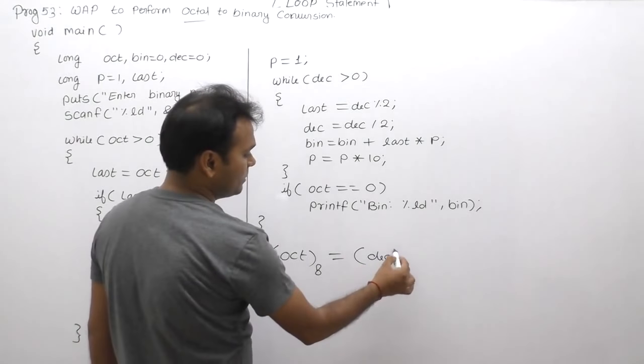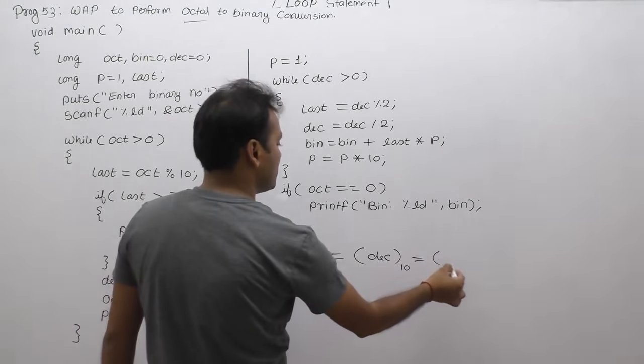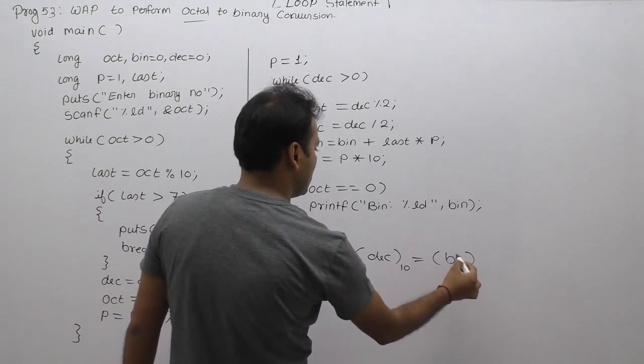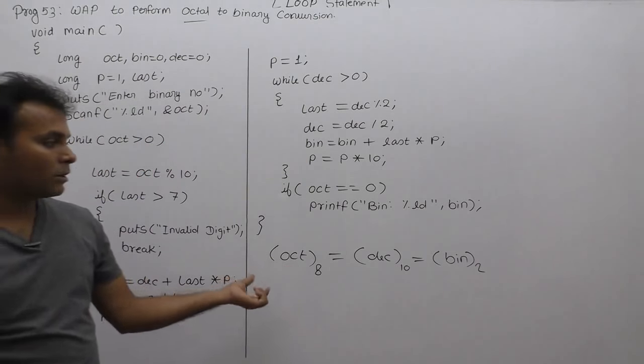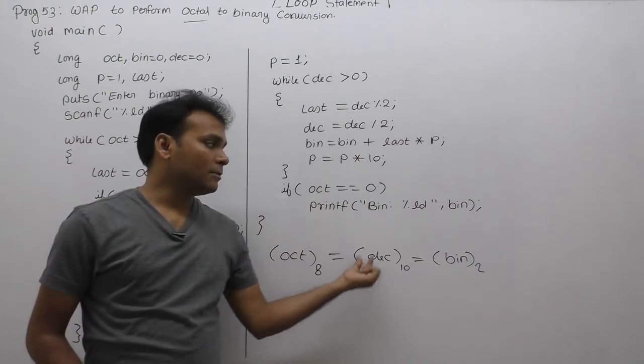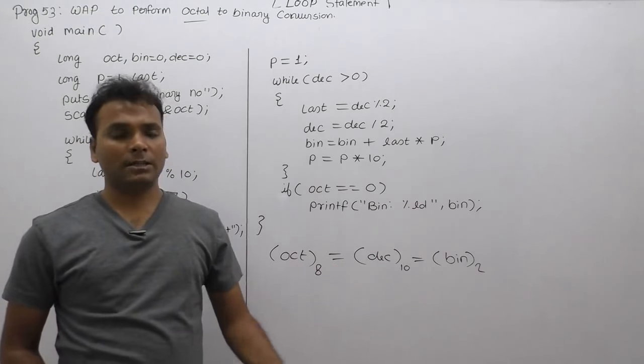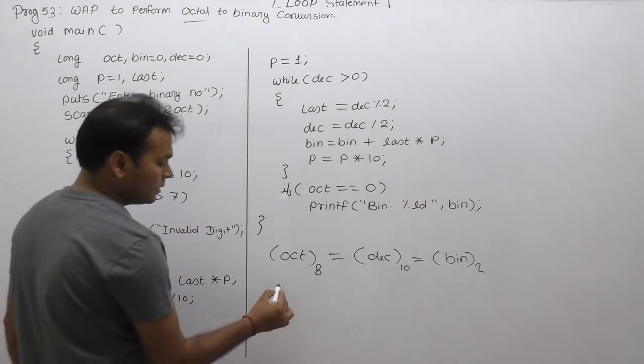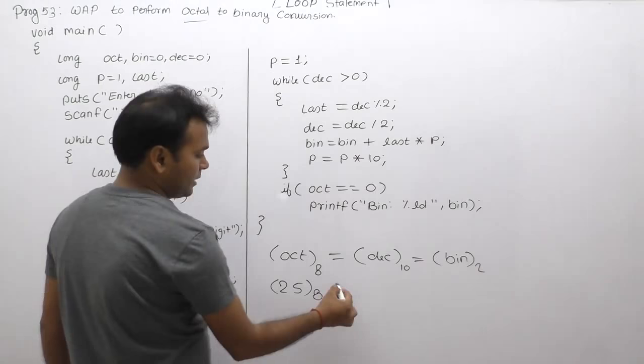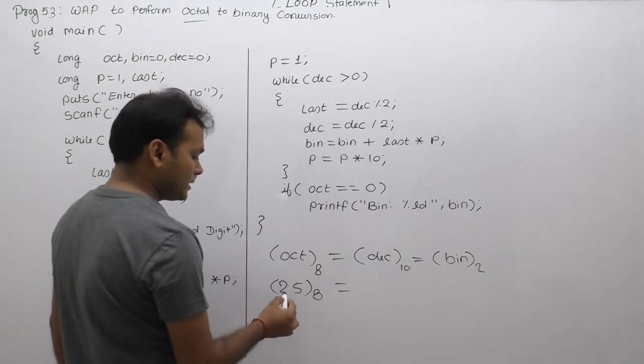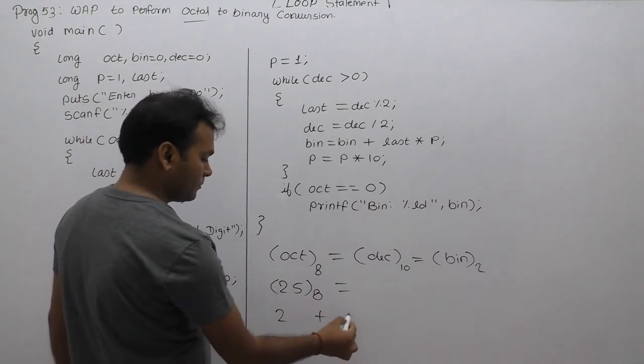Octal number given as any octal number in the form of base 8, convert octal to decimal in the form of base 10, then decimal convert in the form of binary or base 2. This is the another approach. Convert octal to decimal, then perform two steps for conversion. For example, you're having some number as 25 in the form of base 8.